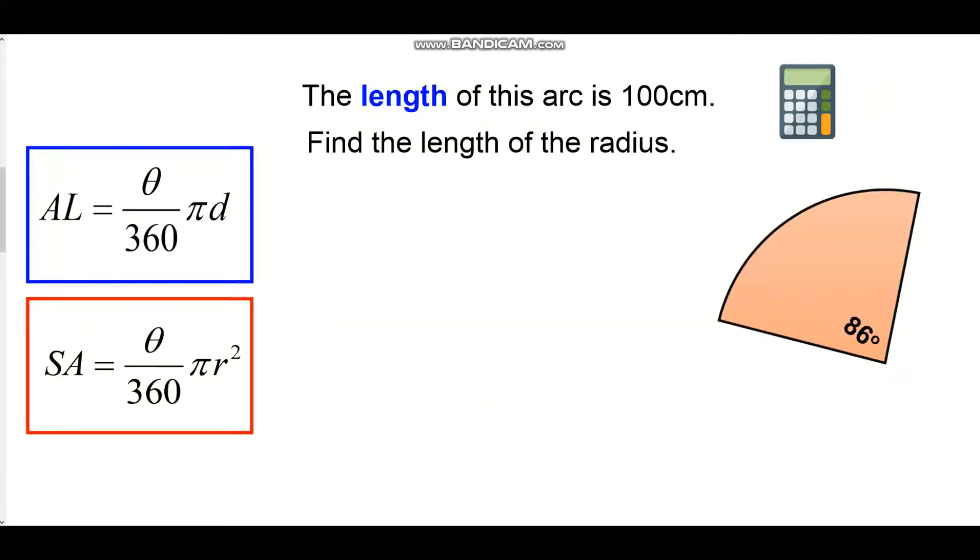Okay so here's a second example very similar to the first one. We're looking for a length of a radius this time but I'm being given that the length of the arc of the sector is 100 centimeters. That means that outside curved edge that would have been part of the circle's circumference is 100 centimeters. Because it has the word length of arc in the question then I'm using my arc length equation. So my arc length equation. First step same as before I'm going to have to put in all the details that I know. So my arc length is 100. My internal angle is 86. 360 is always the amount of degrees in the circle so that always stays the same. I'm multiplying that by pi and then I'm multiplying that by the diameter.